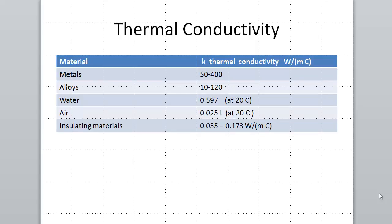Let's look at thermal conductivity of some common materials. Here we have thermal conductivity of metals, the range is anywhere from 50 to 400 watts per meter degree Celsius. Alloys, thermal conductivity is from 10 to 120. Thermal conductivity of water is 0.597 watts per meter degree Celsius at 20 degrees Celsius. And for air, it's really low, it's 0.0251 watts per meter degree Celsius at 20 degrees Celsius.